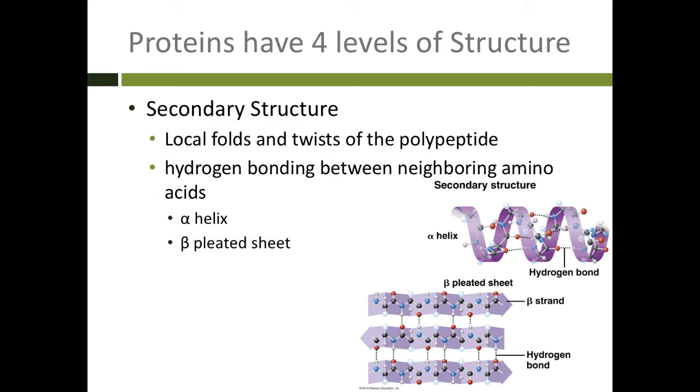They can either form coils that we call alpha helices, or they can form what we call beta pleated sheet, which is sort of like a fan. If you fold a piece of paper up into a fan, it makes that type of shape.